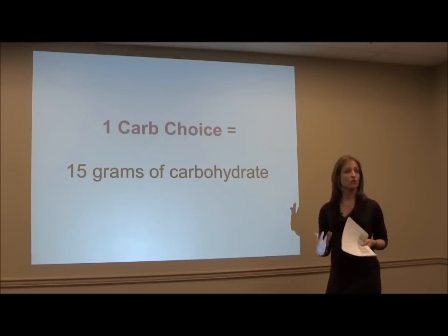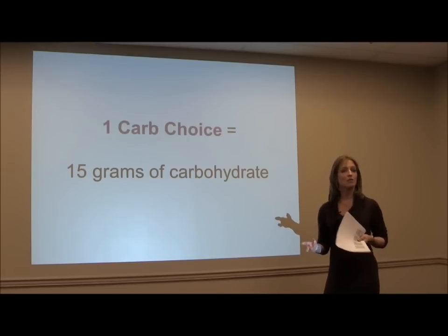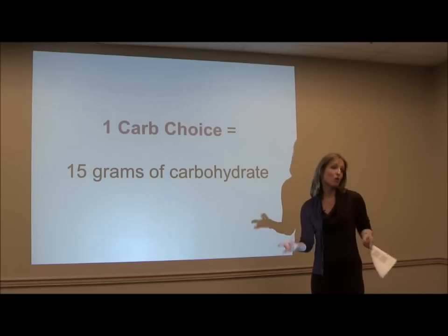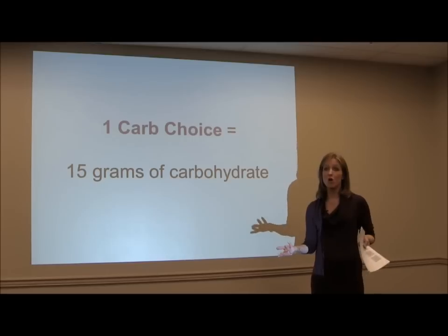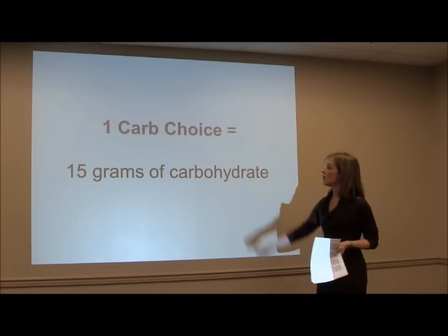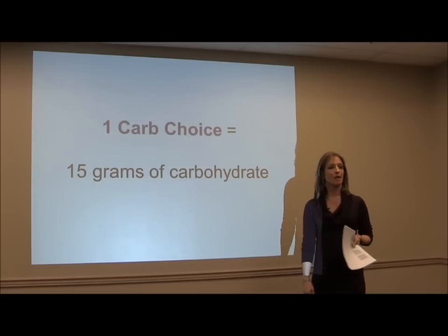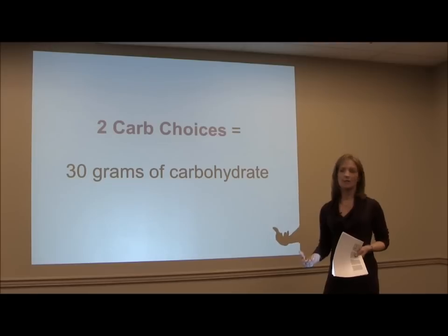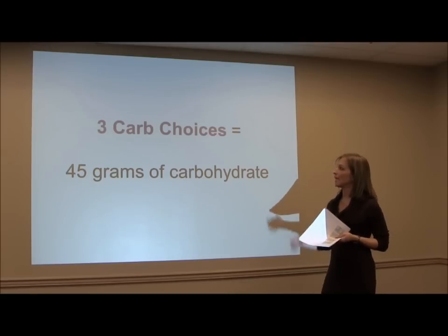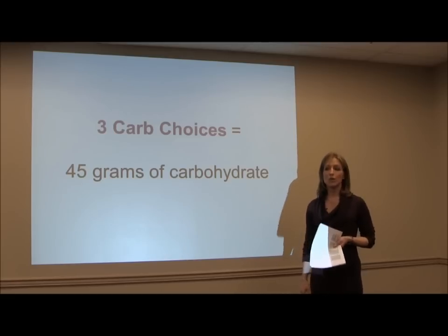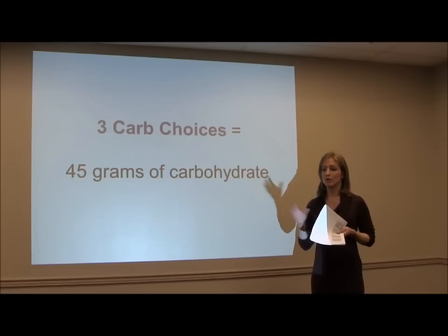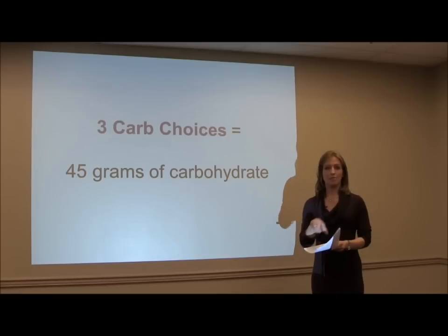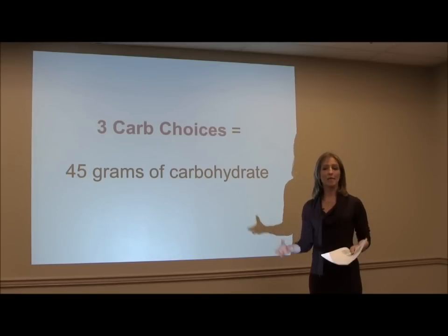Carb counting really does give a lot of flexibility. Within this context, one carb choice is equal to 15 grams of carbohydrate. That food label we just looked at had 14 grams per serving, so that is one carb choice. If you were to drink that whole bottle, that would be four total. Two carb choices equals 30 grams, and three carb choices equals 45 grams.